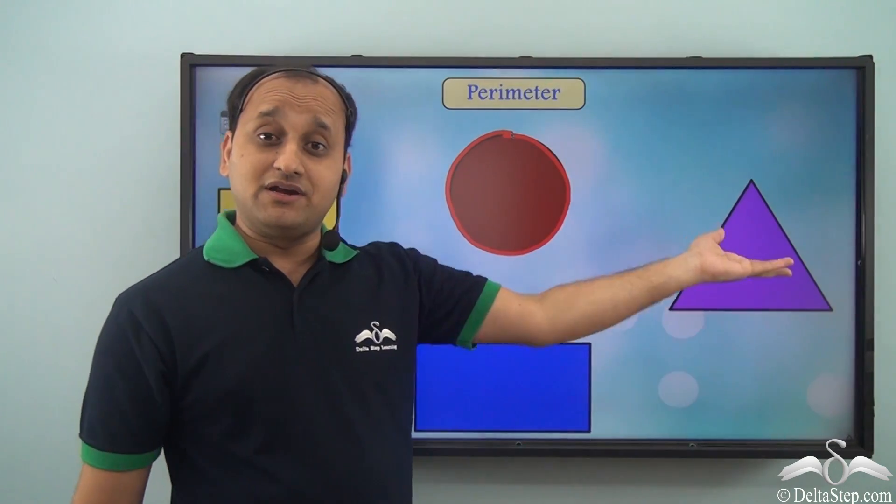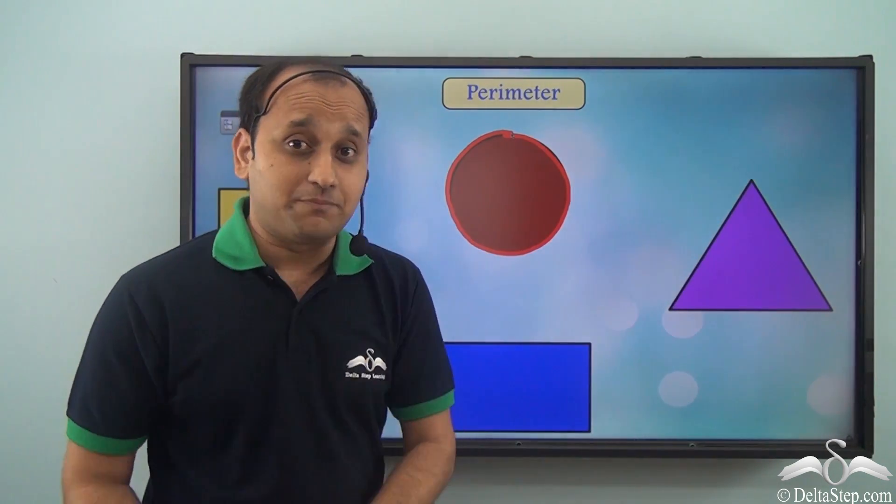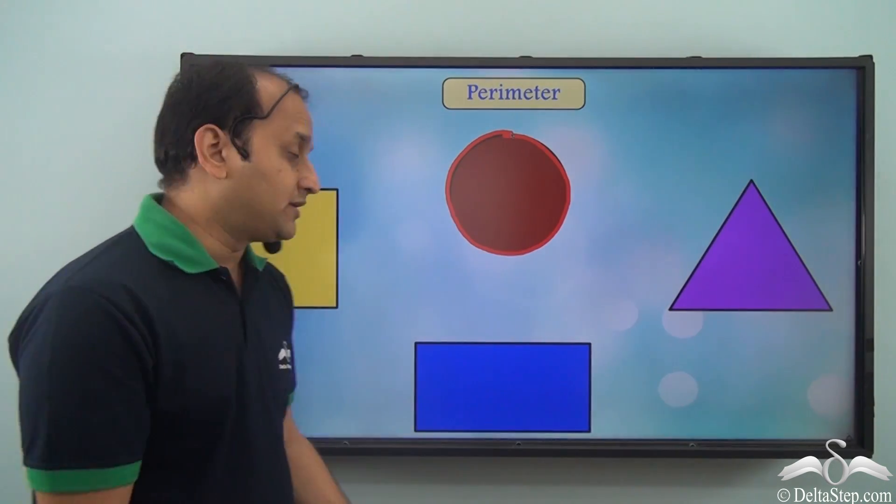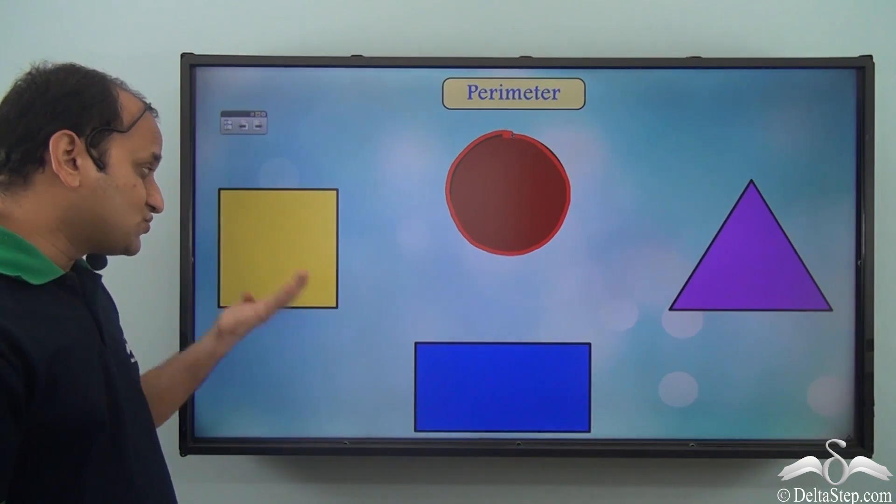Now, even for triangle, similarly, if you add up all the sides, you get the perimeter. Even for a rectangle, if you add up all the sides, you get the perimeter. And in the case of square, if you add all the sides, you get the perimeter.